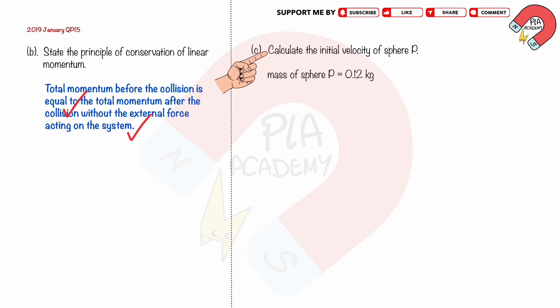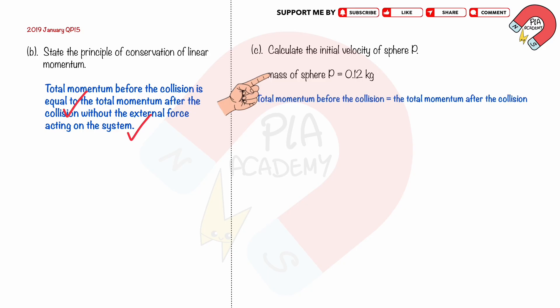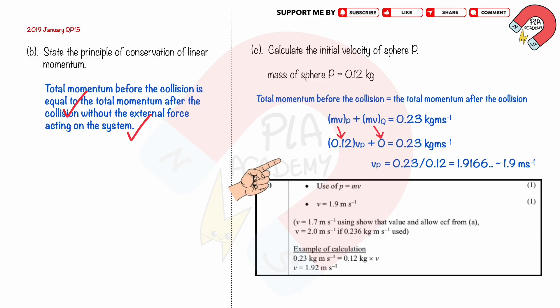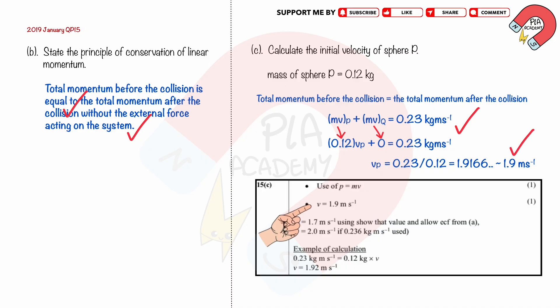Part C. Calculate the initial velocity of sphere P. Mass of sphere P equals 0.12 kilograms. Therefore, total momentum before the collision equals total momentum after the collision. The momentum of P plus the momentum of Q before the collision equals 0.23 kilograms meters per second. Substituting mass of P as 0.12 and momentum of Q as 0 since it is at rest, we solve the velocity of P as negative 1.9 meters per second. You get 2 marks: use the equation P equals MV with correct working, and the correct answer of 1.9 meters per second.